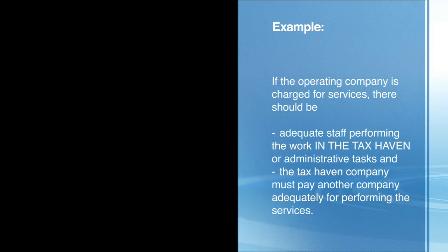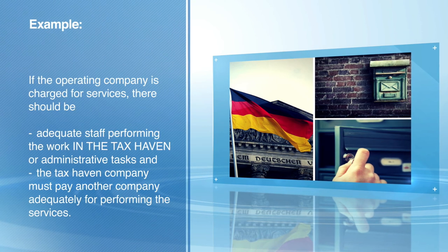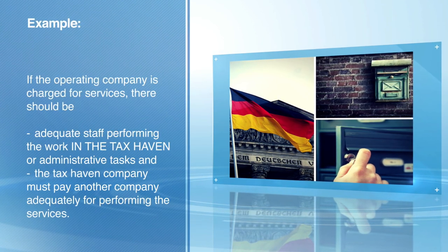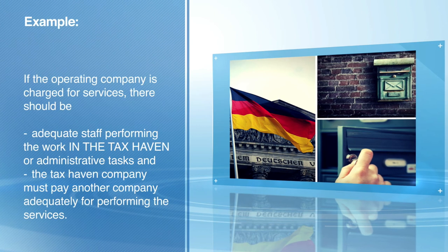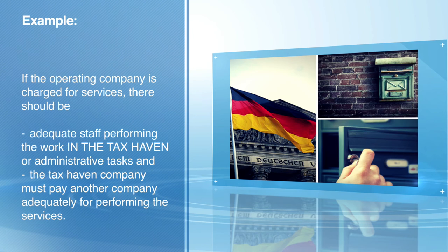If you want to extract profits from a European operating company to a company in a tax haven, you also need to make sure that the operating company receives an adequate return for the payments. For example, if the operating company is charged for services, there should be adequate staff performing the work in the tax haven, or the tax haven company must pay another company adequately for performing the services. All this deals with adequate transfer pricing at arm's length.